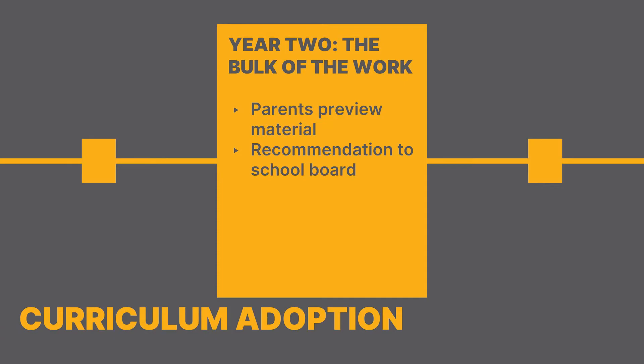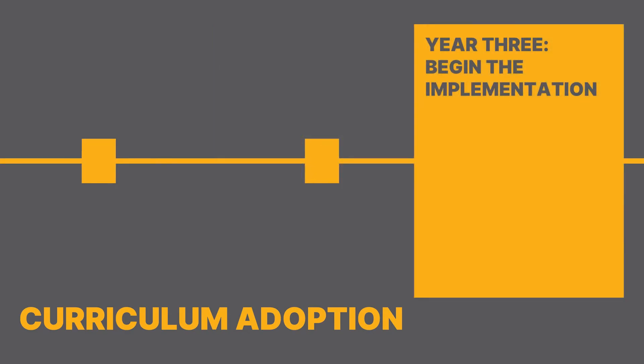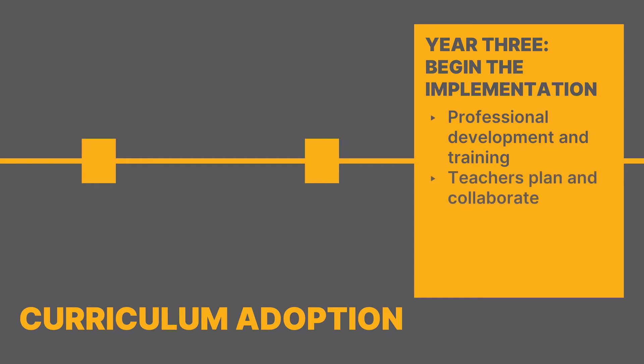Once this process is complete, the recommendation is made to the school board in a public meeting for their consideration. If approved, the materials are purchased, staff training is scheduled, and the next phase of adoption begins. In year three, the goal is to begin the implementation of the materials. A great deal of professional development and training occurs, and teachers work together to plan and collaborate on the use of these new materials.